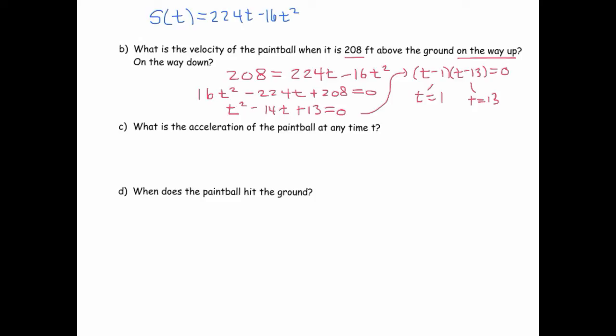So intuitively it should be the case that on the way up, that's after 1 second. So 1 second after you release the paintball on the way up, it's going to be 208 feet above the ground. So the question is what's the velocity? So remember that our velocity function, which is the derivative of our position function, is going to be 224 minus 32t. So we can say on the way up, our velocity, v(1), is equal to 224 minus 32 times 1, which is equal to 192 feet per second.